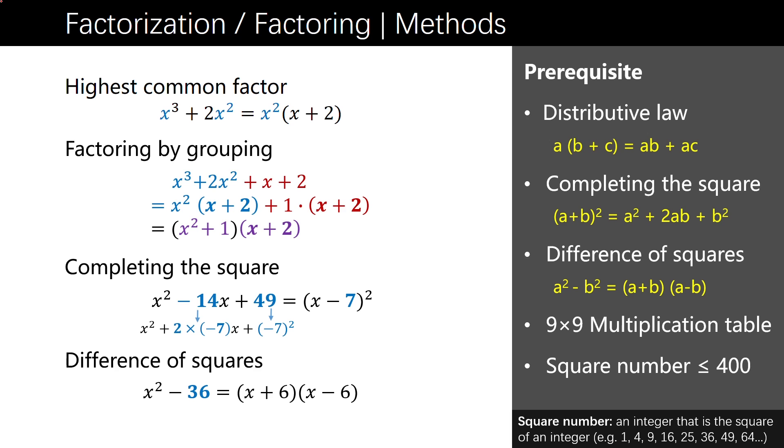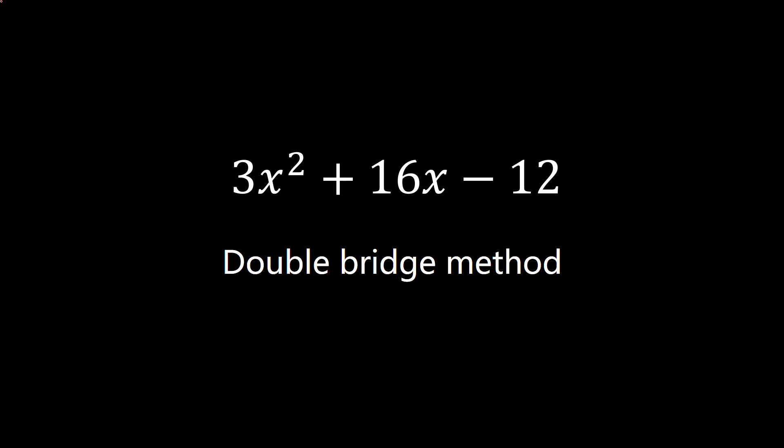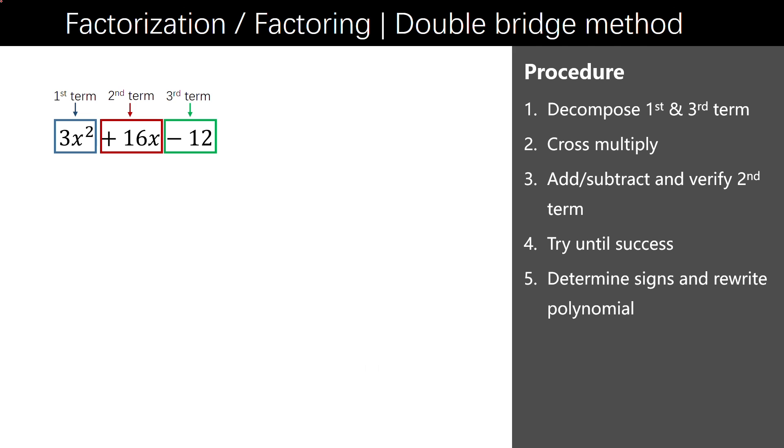If you know the 9x9 multiplication table and the square numbers less than 400 by heart, that would definitely help you a lot. Now I'm introducing two major methods to factorize the trinomials. The first one is the double bridge method. At the beginning we need to put the terms of the trinomial in the proper order. Higher power goes to the left and constant goes to the right.